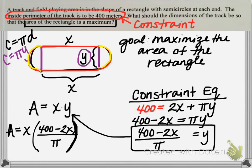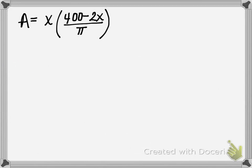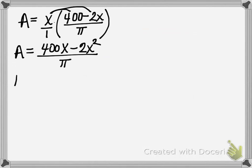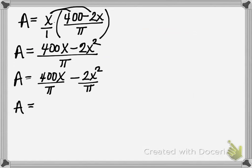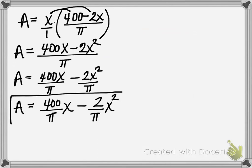Let's clean this up so we can see what the area function looks like graphically. Distributing X into the numerator gives A = (400X − 2X²) / π. Doing term-by-term division, that's 400X/π − 2X²/π. Writing out the coefficients explicitly: A = (400/π)X − (2/π)X². This is our model, and this is what we are trying to maximize.